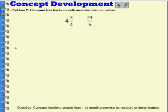Now let's compare two fractions with unrelated denominators. In this case, I have a mixed number, 4 and 3 fourths. Over here, I have 23 fifths. So this is a fraction greater than 1. I will need to first change this fraction greater than 1 into a mixed number.